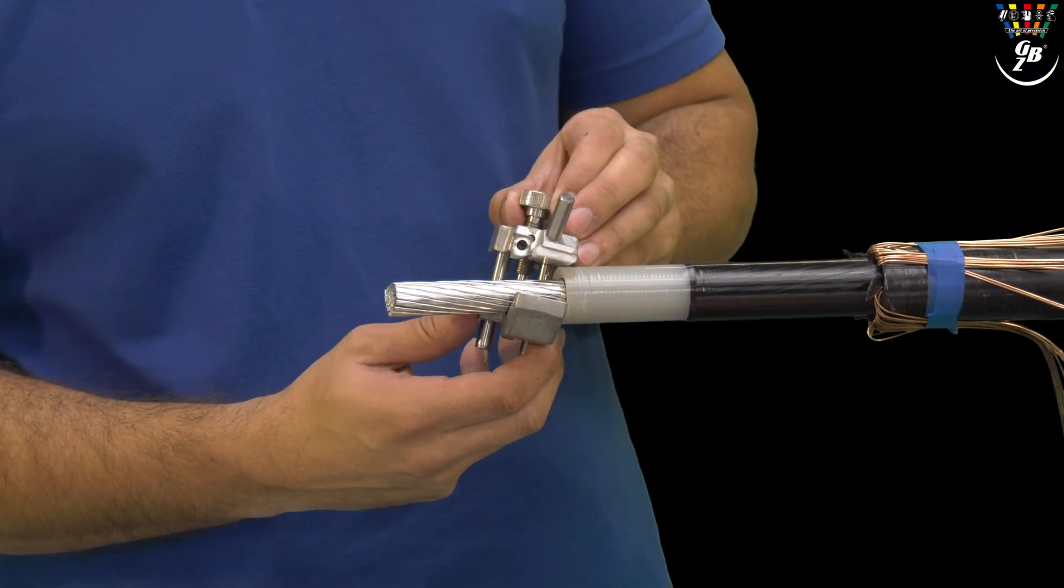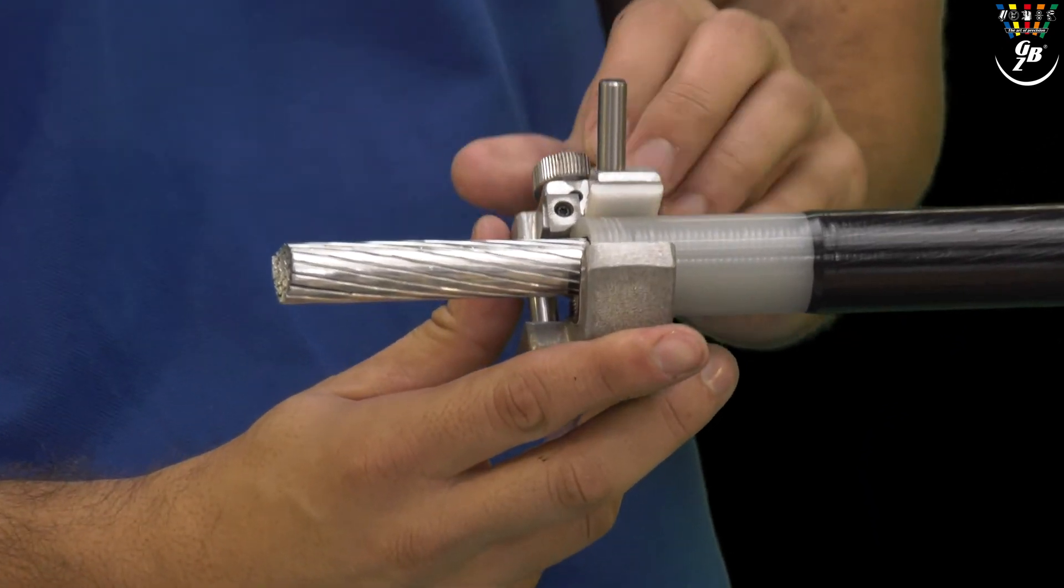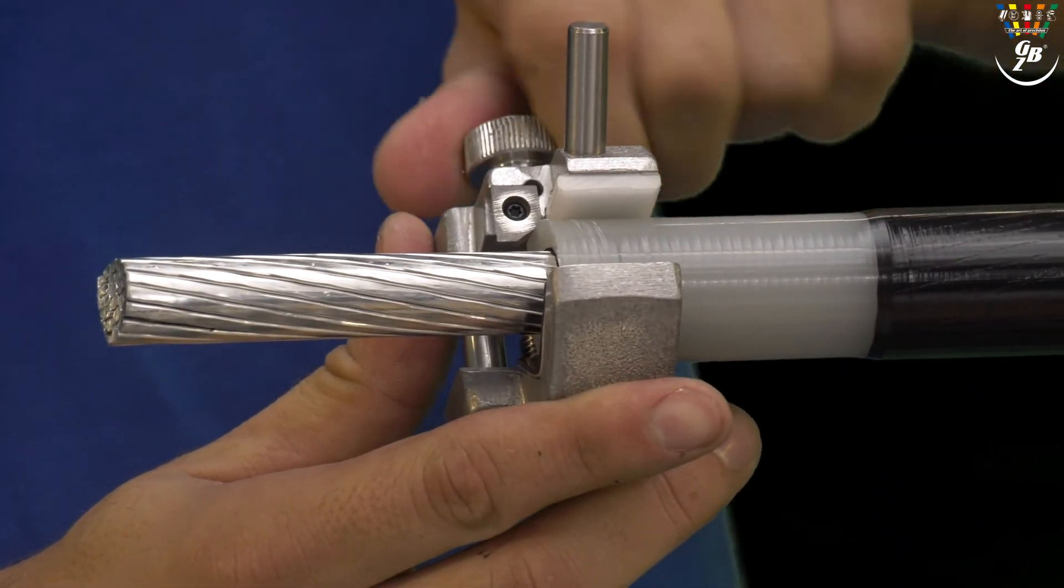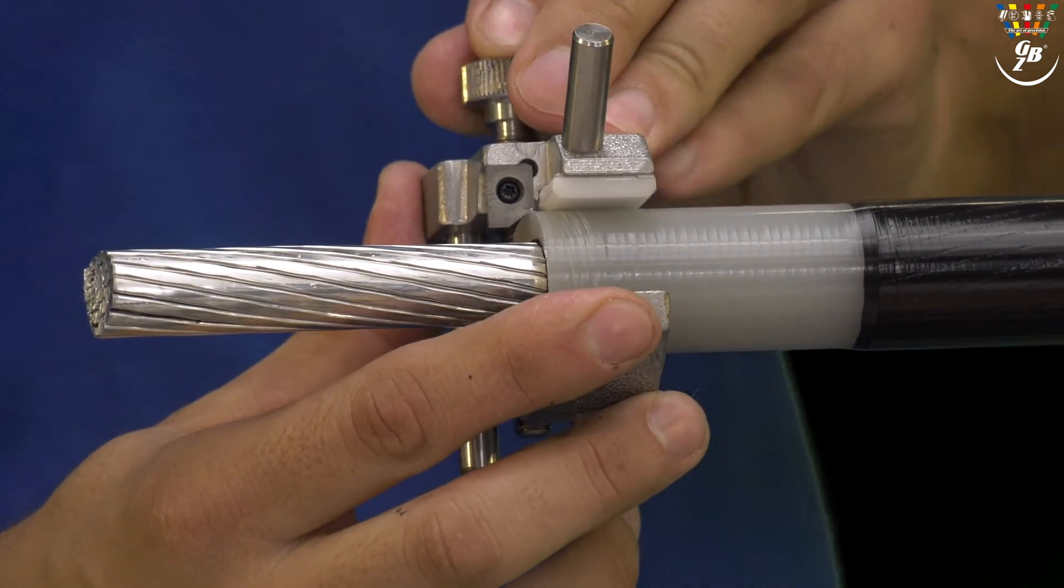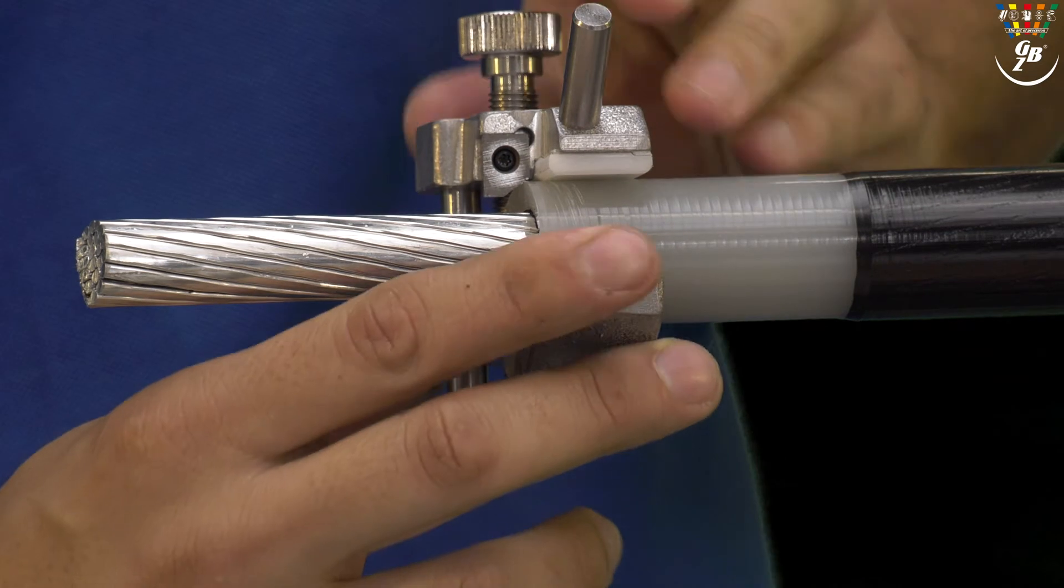In the last step we place the edge cutter GBKG053 on the end of the insulation, tighten it and create a chamfer with a light axial pressure.